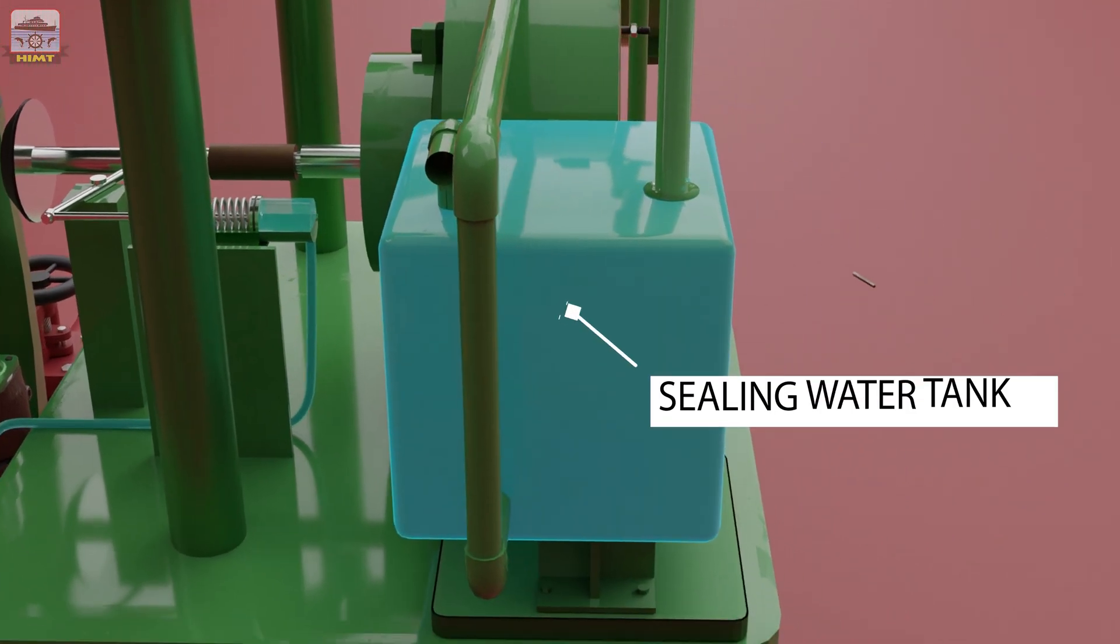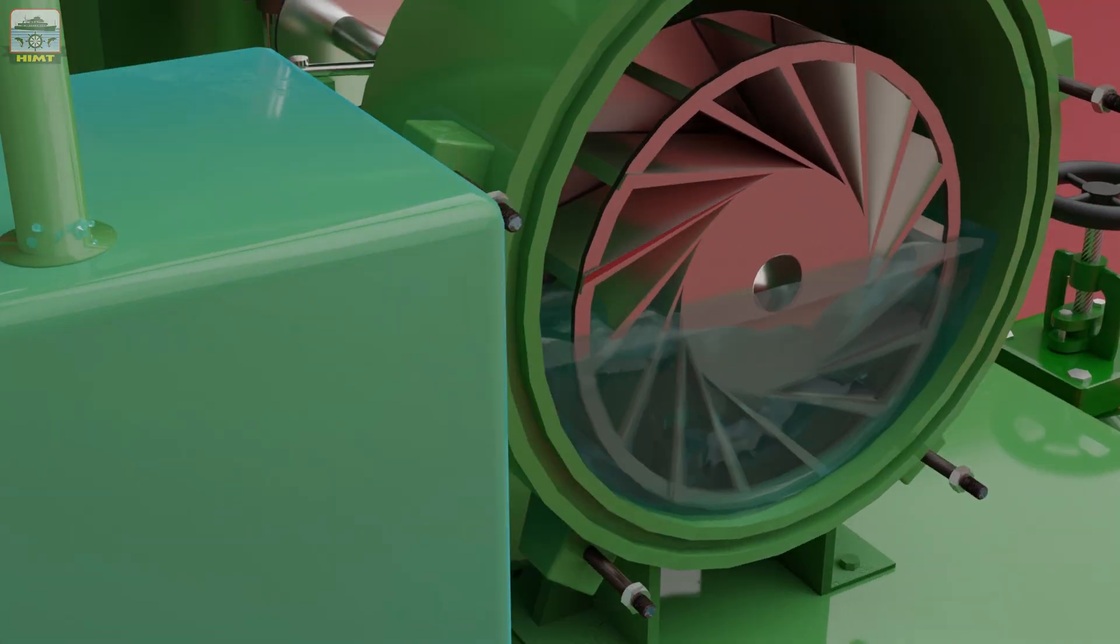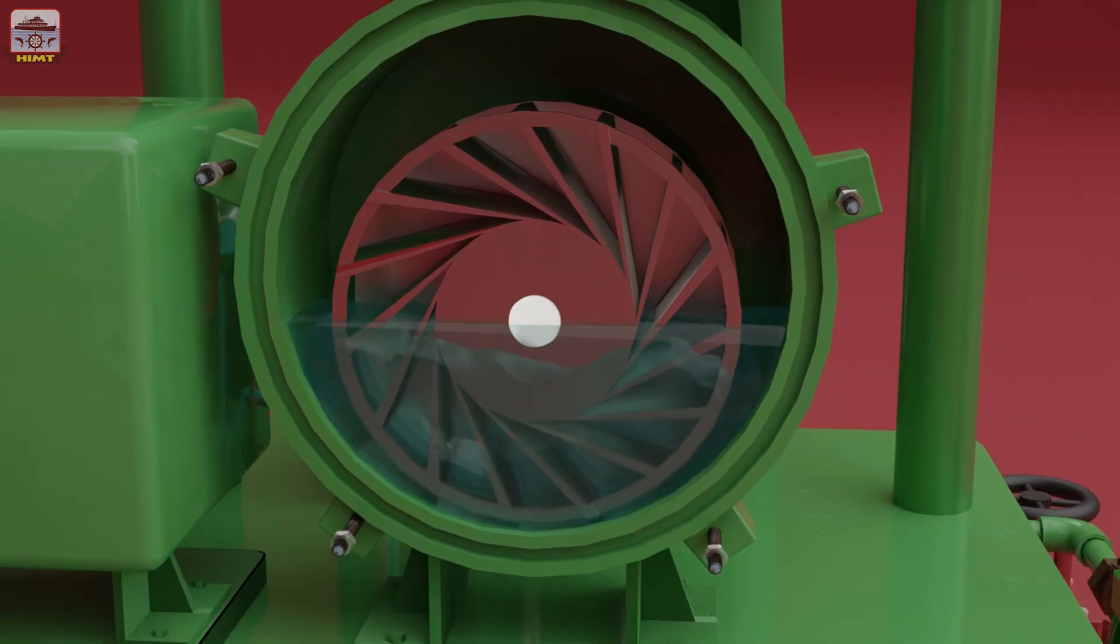Fresh water is stored in a sealing water tank which is mounted by the side of the pump. When the pump is at standstill, the water is filled to half the level in the casing.